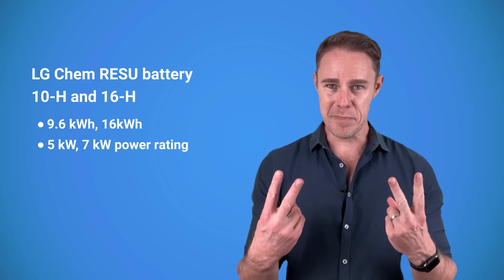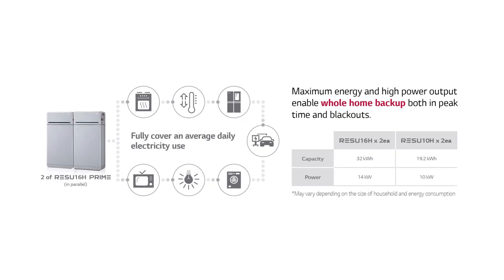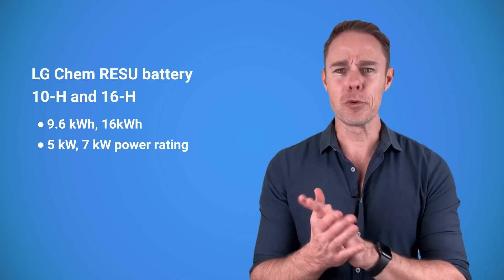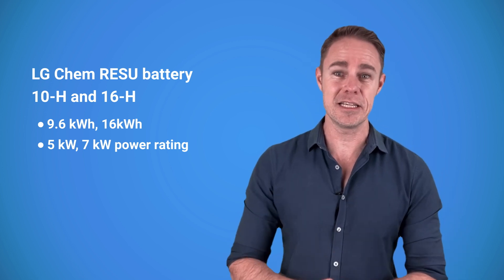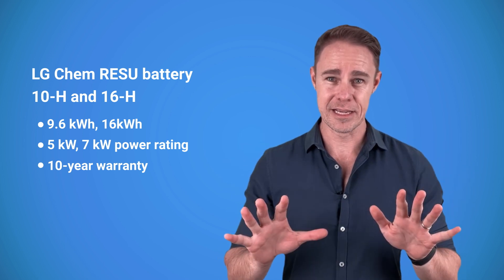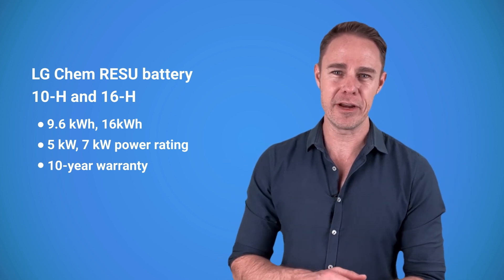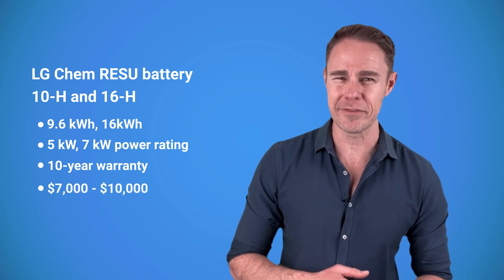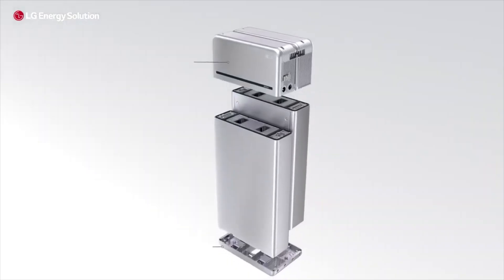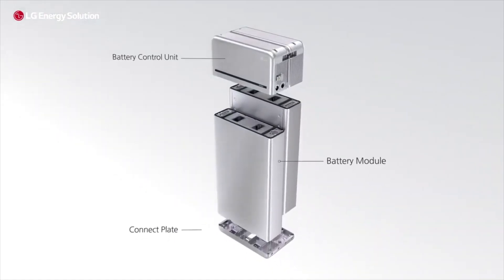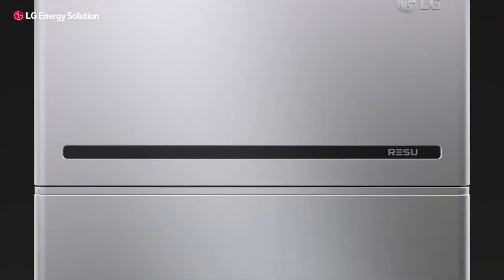You can connect two units in parallel to get bigger storage if you'd like. Now, according to the warranty list, these models should retain at least 70% of their capacity for 10 years. I was able to find a 10H variation battery set for a little above $7,000 and a 16H set for a little under 10 grand. A set consists of two battery modules and a control unit, which is basically the brain of the battery.